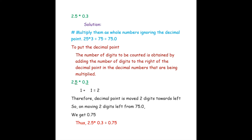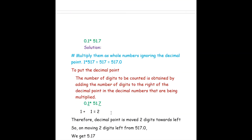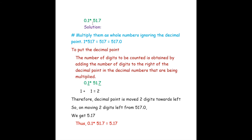Now we place the decimal point correctly. In 2.5, there is one digit after the decimal point, and in 0.3 there is also one digit — so 1 plus 1 gives two digits total. We move the decimal point two digits towards the left from 75.0, giving us 0.75. Thus 2.5 into 0.3 is 0.75.